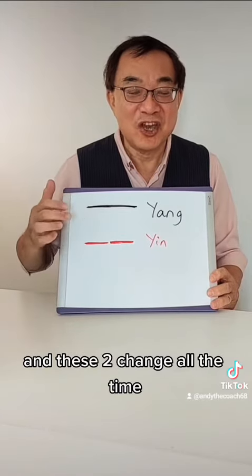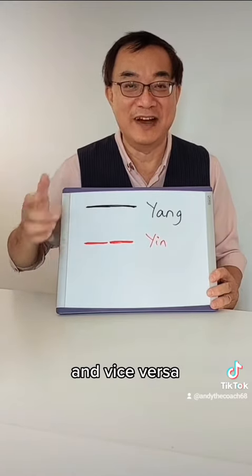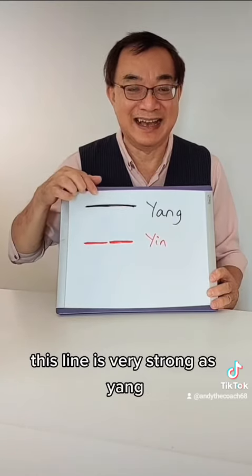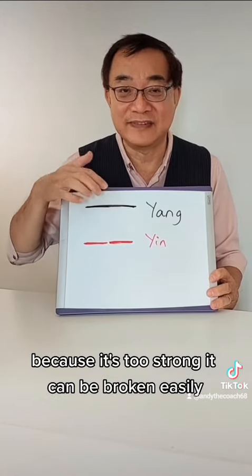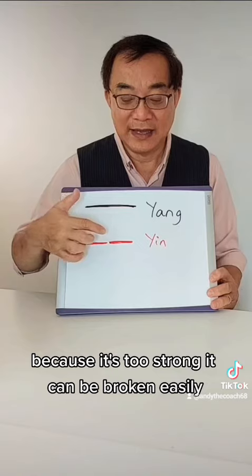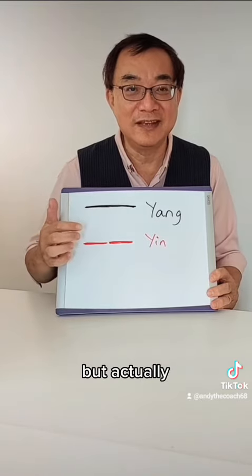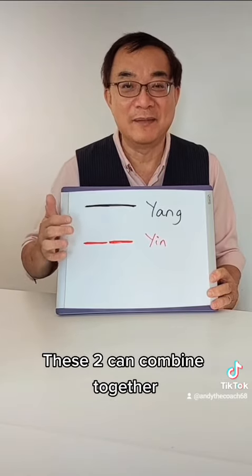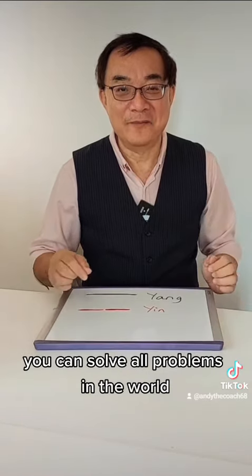These two change all the time — something that is Yang can become Yin in the next moment, and vice versa. This Yang line is very strong, but if there is some external force, it can break too easily because it is too strong. And these two Yin lines — they are broken and weak, but with the right environment, they can combine together and become as strong as one Yang line. With Yin and Yang, you can solve all problems in the world.